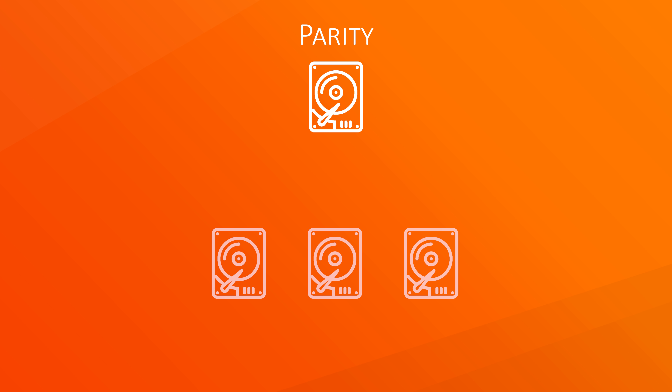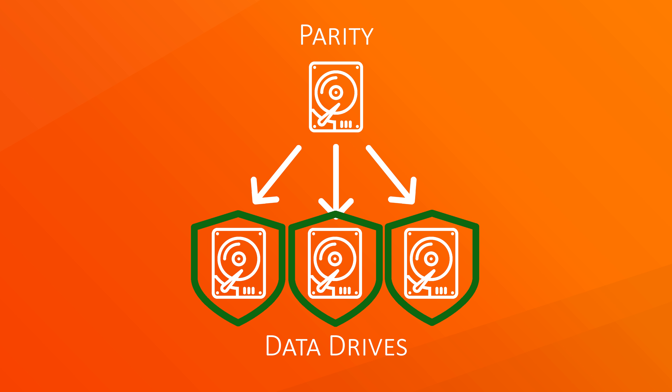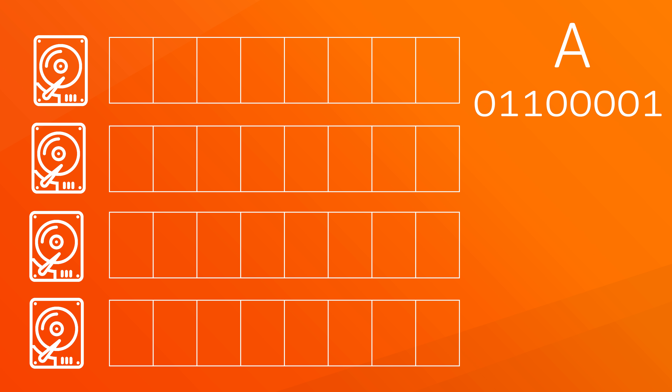But why is that? And how does parity actually work to keep your data when a disk fails? We can imagine each disk as a row of slots that can either have a 0 or a 1 inside. For example, the letter A would be represented as 0, 1, 1, 0, 0, 0, 0, 1.